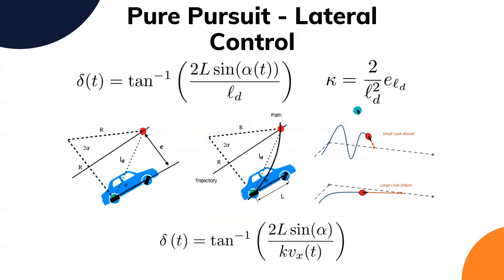For lateral control, the first autonomous vehicle that won the DARPA challenge used a modified version of pure pursuit. Lateral control is basically how you control your steering to get back on the reference line. Pure pursuit works by keeping a look-ahead distance — if your reference frame for the car is on the rear wheels, you want to minimize the cross-track error using this look-ahead distance.